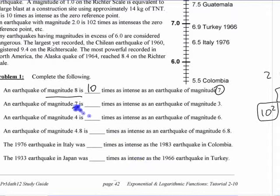A magnitude 7 is how many times as intense as a magnitude 3? Yeah, 10,000, right? Ten to the fourth or 10,000 times as intense.